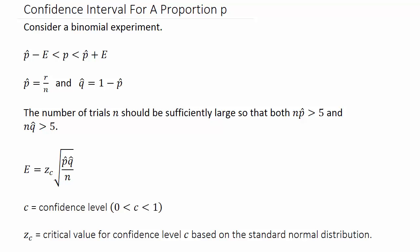Let's consider a binomial experiment. The population probability P is between P hat minus E and P hat plus E, where P hat is our point estimate. P hat equals R over N, and Q hat equals 1 minus P hat. This is the probability of a success, and this would be the probability of a failure.